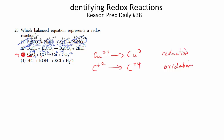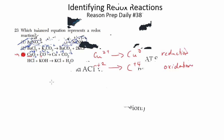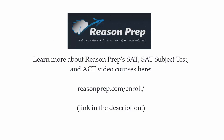So the answer is three. To determine if an equation is a redox reaction, look at those oxidation numbers — they will always tell you the answer, as long as you can fill them in on both sides. To learn more about ReasonPrep's SAT, SAT Subject Test, and ACT video courses, go to reasonprep.com/enroll — you can find the link in the description below the video.